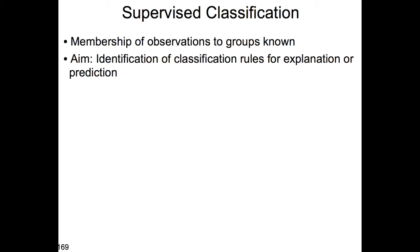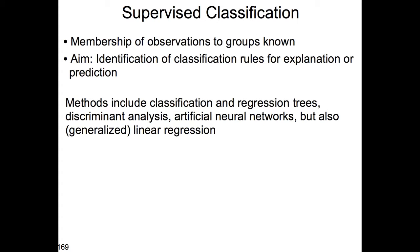Different methods are known here. These include classification and regression trees as already mentioned, discriminant analysis, artificial neural networks, and also generalized linear regression. As you have realized when we dealt with regression techniques, this also aims at explaining or predicting — based on one variable — the outcome of one or multiple response variables, as in the case of RDA.